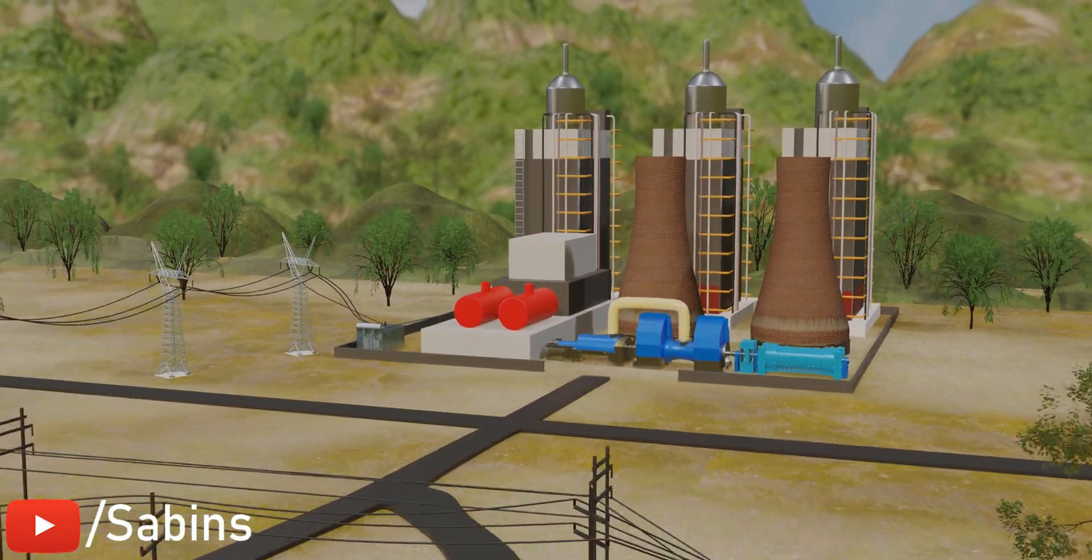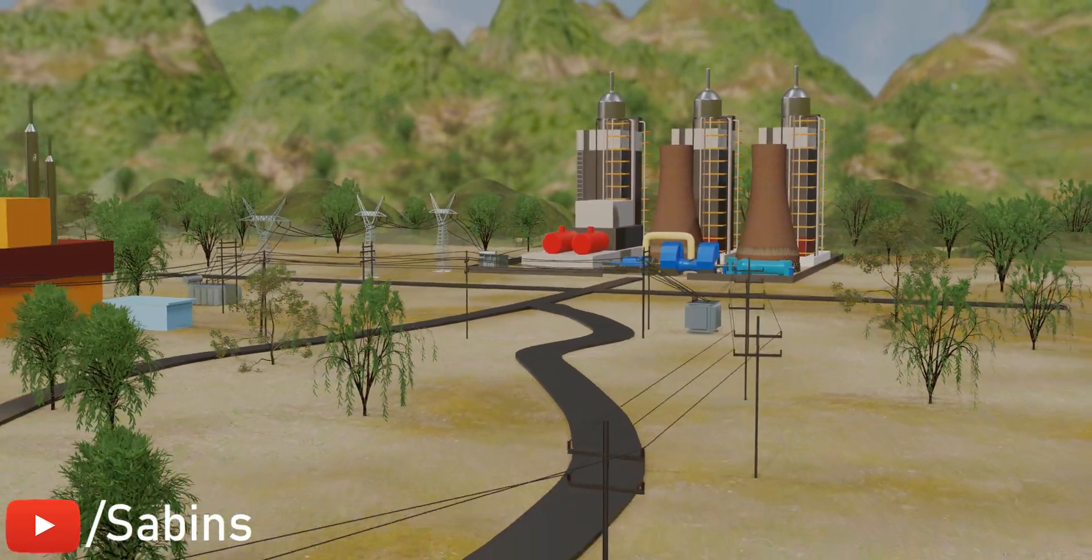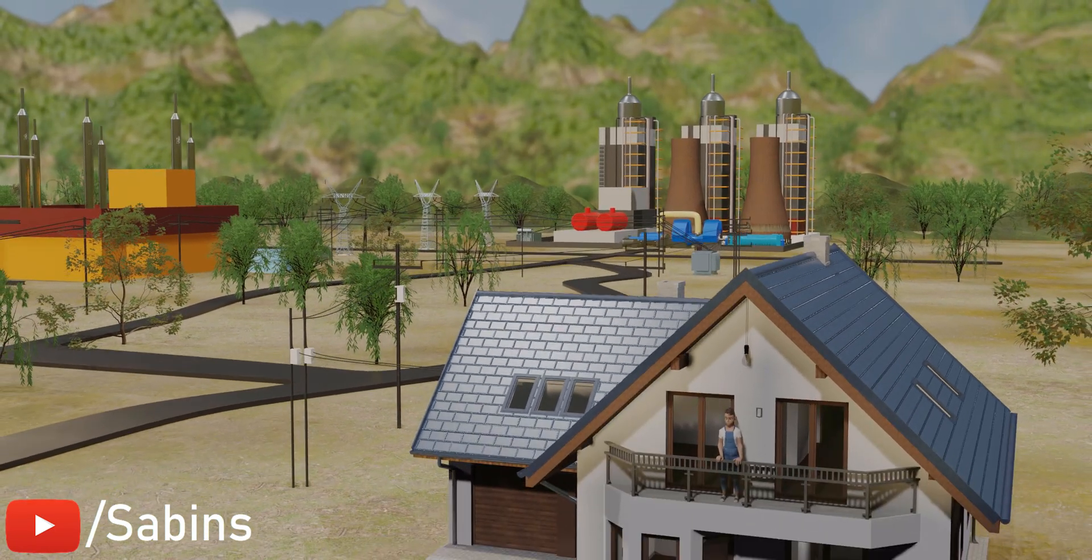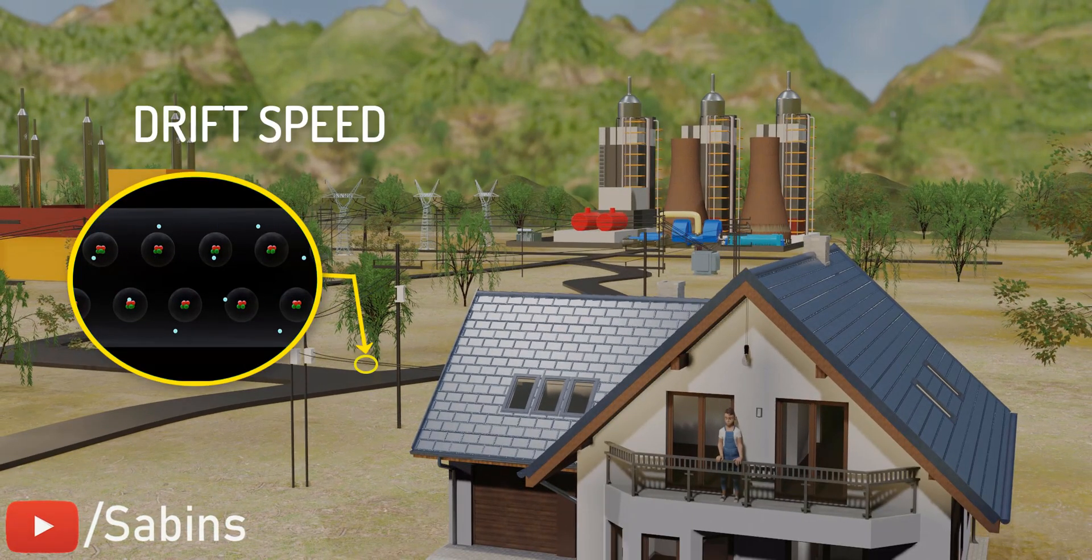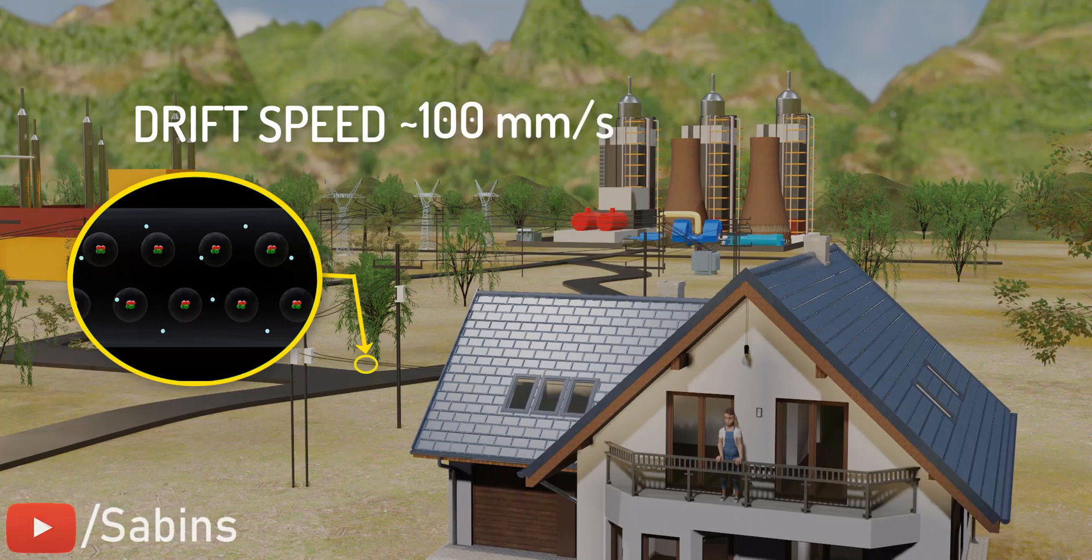A power plant that might be located hundreds of miles away from your home powers your home appliances. The speed of electrons through a conductor is called drift speed and it is somewhere around 100 millimeters per second.